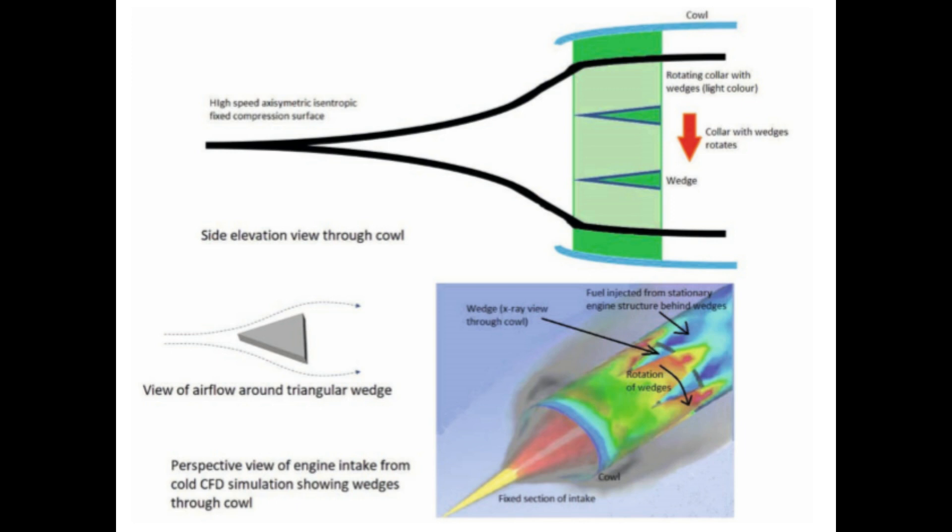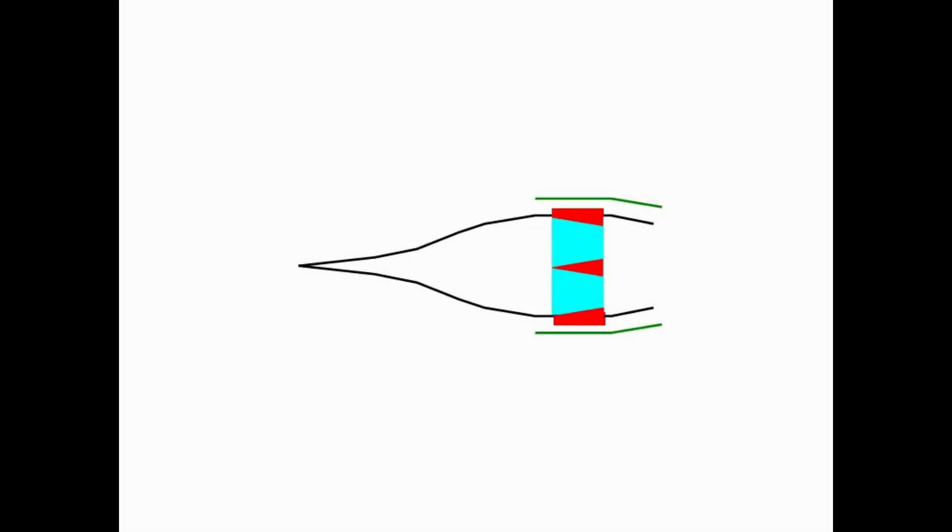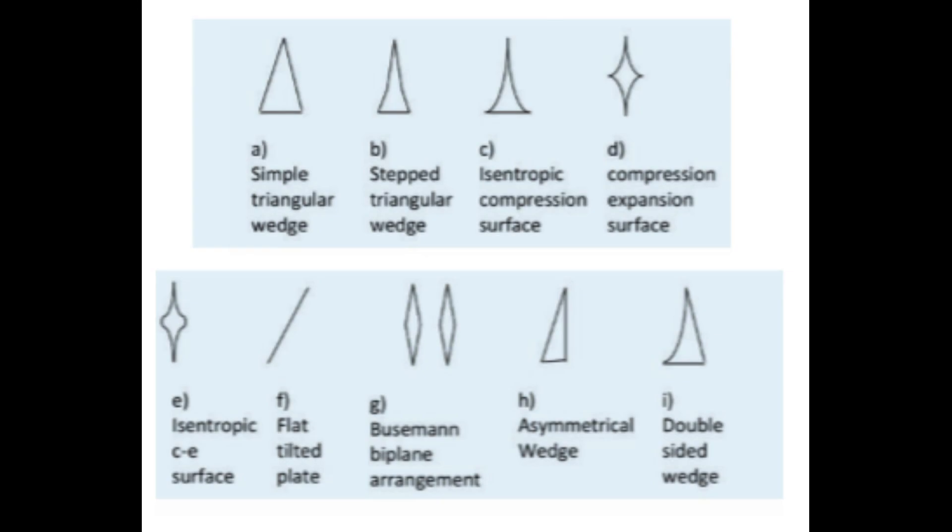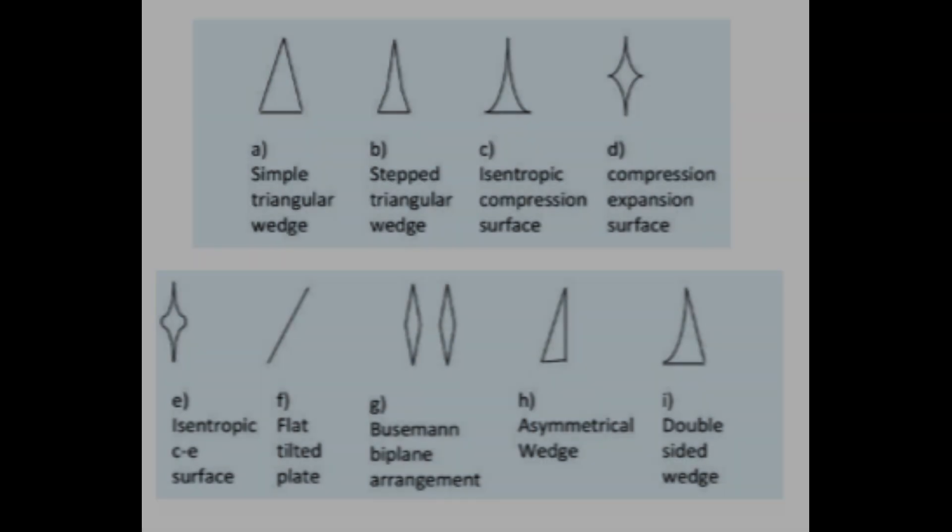The paper listed in the description explains in detail why this concept is better. These wedges rotate on their collar, as shown in the animation on the screen. In actual fact, although they have been drawn here as triangular wedges, they could potentially conform to a number of different shapes, as shown.